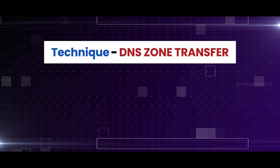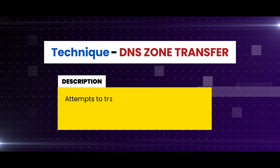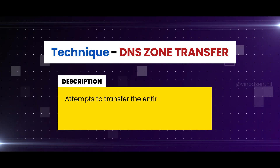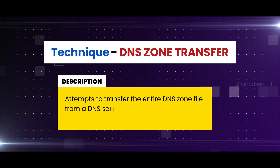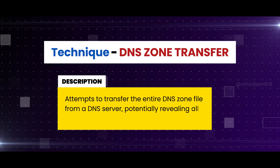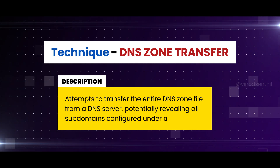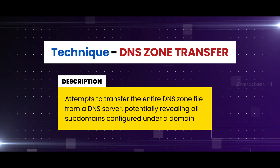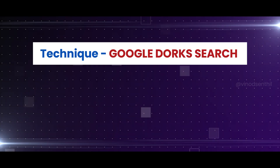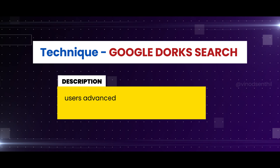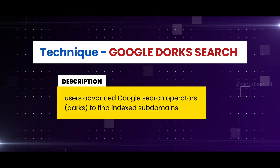Number three: DNS zone transfer — attempts to perform a transfer of the entire DNS zone file from a DNS server, potentially revealing all subdomains configured under a domain. Number four: it also uses search engine dorks like Google dorks to discover subdomains.